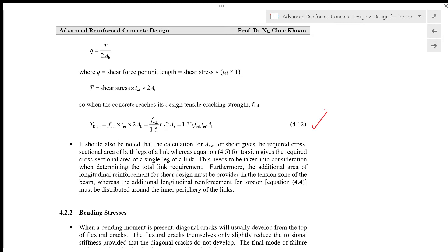Furthermore, the additional area of longitudinal reinforcement for shear design must be provided in the tension zone of the beam, whereas the additional longitudinal reinforcement for torsion given in equation 4.4 must be distributed around the inner periphery of the links.